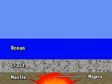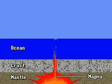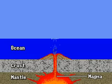Volcanic islands are formed by oceanic volcanoes. Molten rock, called magma, rises from a layer of the earth called the mantle and erupts through the earth's crust.